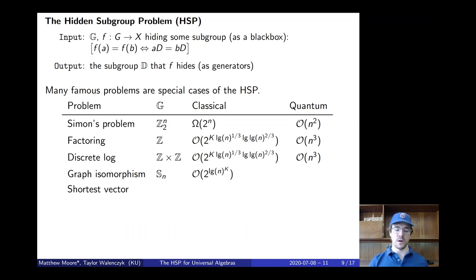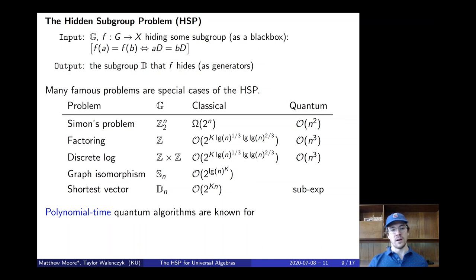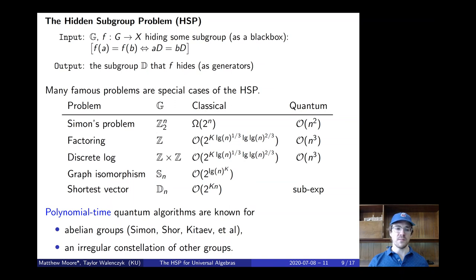The shortest vector problem — given a basis of a Q vector space, find the shortest nonzero vector in its Z-span — corresponds to the HSP on the dihedral group of order 2n. Classically it has complexity 2^(kn) for some constant k. The quantum complexity is sub-exponential but not polynomial; a polynomial time algorithm is not known. We do know polynomial time quantum algorithms for all abelian groups, due to Simon, Shor, Kitaev, and many others. Beyond that, it's just an irregular constellation of other groups, with proofs that are ad hoc and tailored to individual groups.